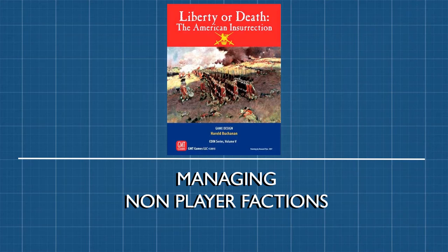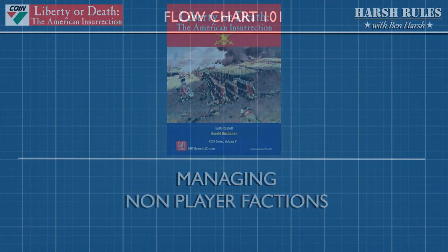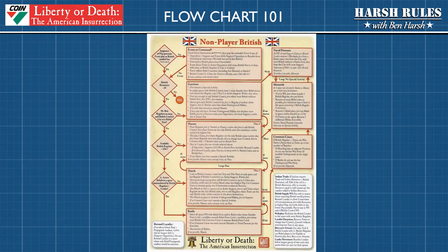Let's begin with an overview of managing non-player factions in Liberty or Death. Non-player decisions are governed by a flow chart. In the game box are foldouts that list a flow chart for each game faction that governs their decisions throughout the game. These flow charts are designed to utilize logic and priority to simulate a reasonable facsimile of human strategy. This flow chart is organized in three lanes.